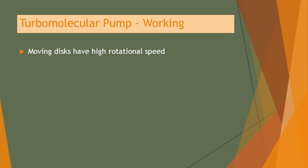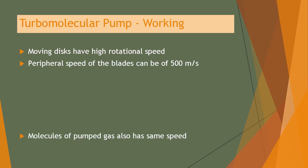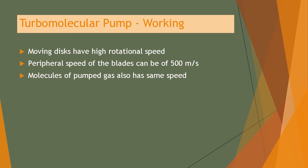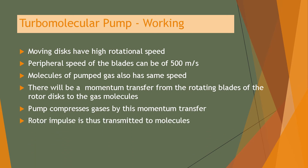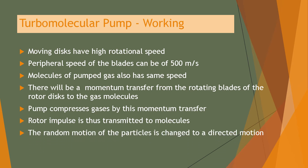The working of a turbo molecular pump relies on the moving disc having high rotational speed; the peripheral speed of the blades can be up to 500 meters per second. Molecules of the pumped gas have similar speeds, and there is a momentum transfer from the rotating blades of the rotor disc to the gas molecules. The pump compresses gases by this momentum transfer, so the rotor impulse is transmitted to the molecules, changing their random motion to a directed motion and achieving the pumping process.